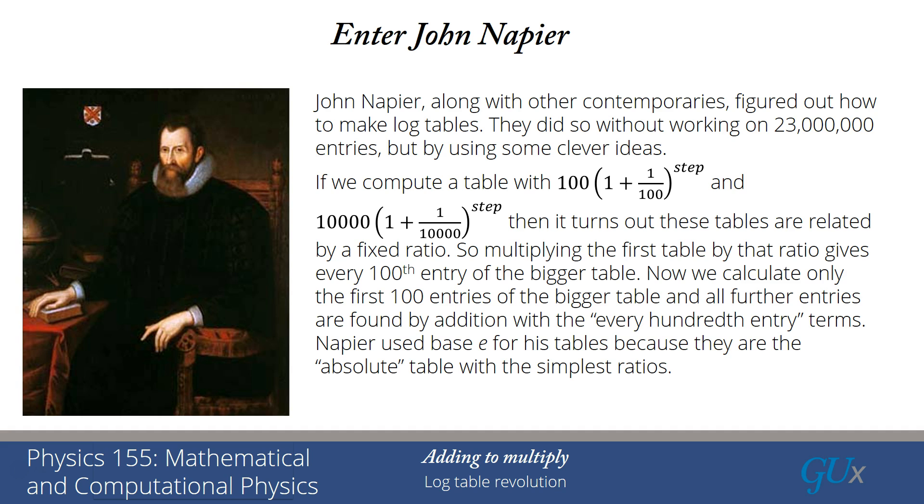Now Napier used the base E for his tables because they are the absolute table that has the simplest ratios. But once you start trying to do calculations, you very rapidly find that if your table is done with E, it makes trying to extend the table so that you can use it for all of your calculations really rough. But if you work with a log base 10 table, it's much more practical. And so eventually the log base 10 tables were made available.